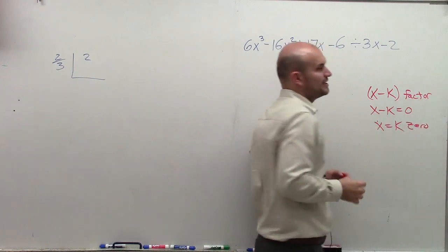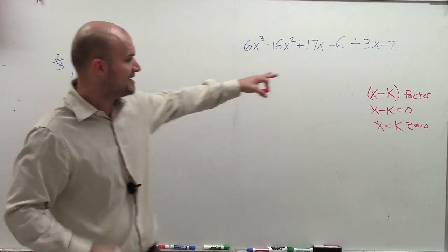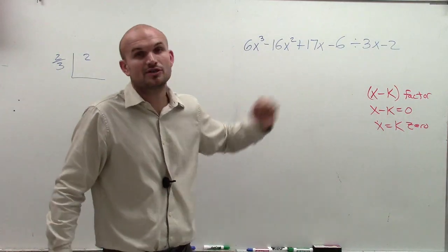OK? And that's part of the zero factor theorem that we had. Whenever you have a factor x minus k, then the zero is going to be x equals k.